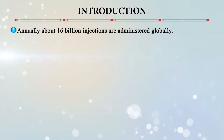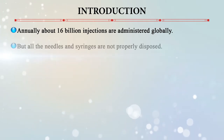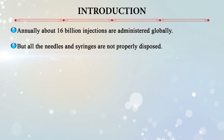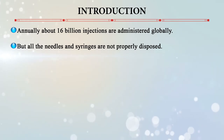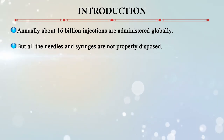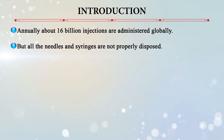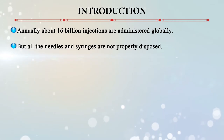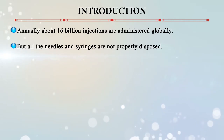Annually, 16 billion injections are administered globally. All the needles and syringes are not properly disposed of. Until a few years ago, syringes were sterilized and reused, but now we have one-time disposable syringes. Even diabetic patients use their own syringes for blood sugar testing. When pricked, there will be blood and infectious material on those syringes and needles. So how do we dispose them off safely?